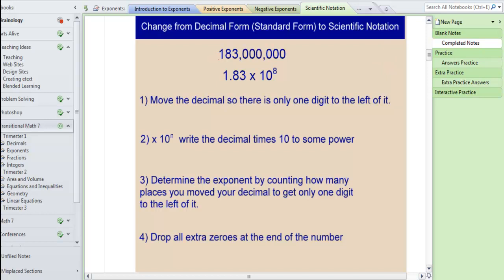You can see this in the example I have at the top. So I have 183 million. The decimal of a whole number is always understood to be at the very end or the very right hand side. As a matter of fact I can put a decimal in as many zeros after that as I would like. So there is a decimal at the end of this number.